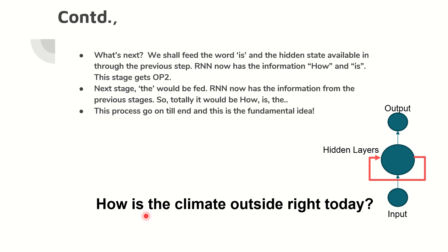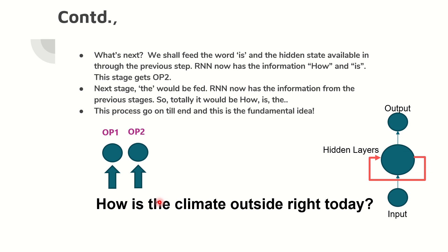Now the RNN has memory. It remembers that the previous input was 'how', stored in the hidden layers. So 'how' and 'is' are both available, and together they produce the next output. Before the word 'the' is sent in, the previous result is already available in the hidden layer. Output one comes first, then output two — which is derived in addition to the results from output one — then output three, which depends on output two and output one stored in the hidden layers.